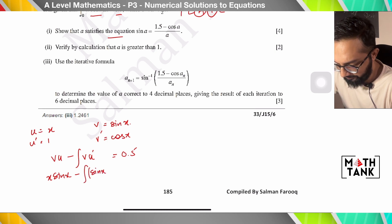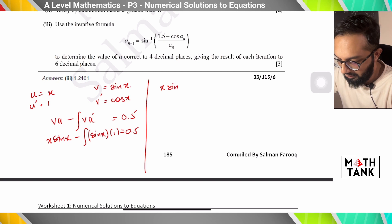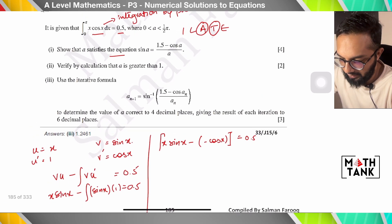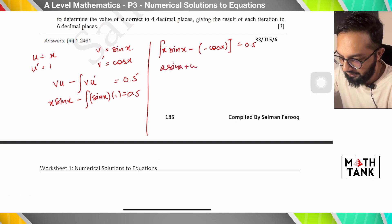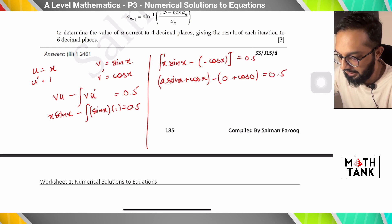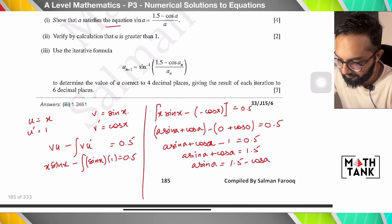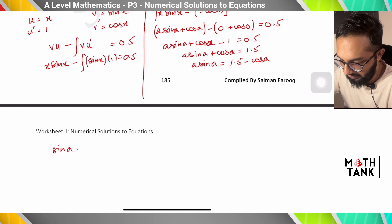Applying the limits: the upper limit gives a sin a + cos a; the lower limit gives 0 + cos 0 = 1. So a sin a + cos a − 1 = 0.5, which means a sin a + cos a = 1.5. Rearranging: a sin a = 1.5 − cos a, so sin a = (1.5 − cos a)/a. This is the required expression for part 1.